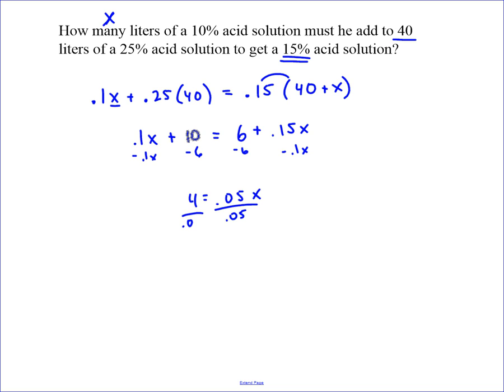40 divided by 0.05 is just 8. So the correct answer to this question is 80 liters of this 25% solution is going to be added to the 40% solution to get a 15% acid solution.